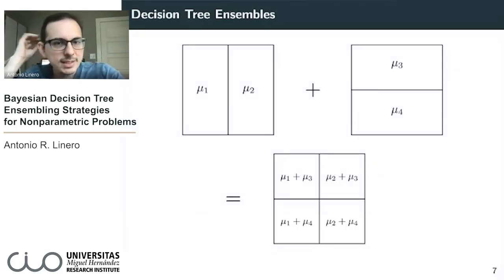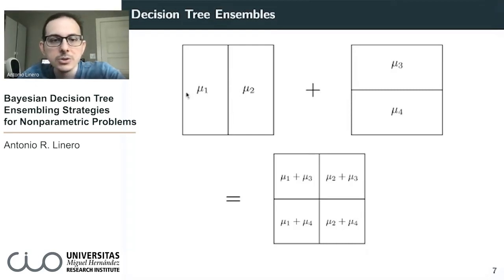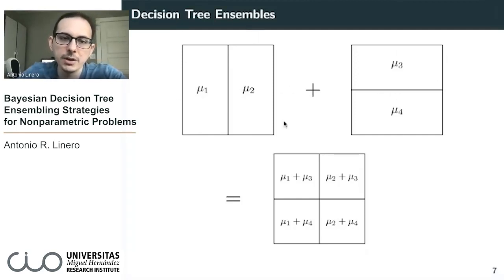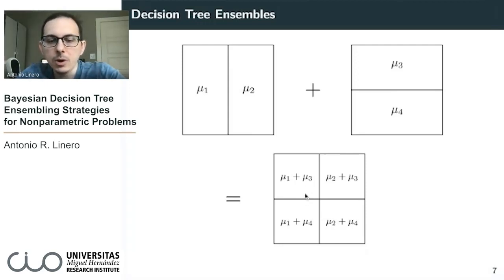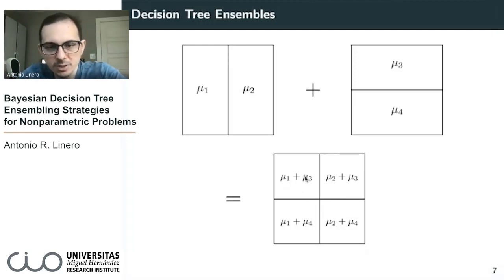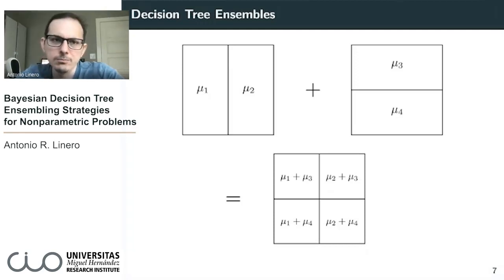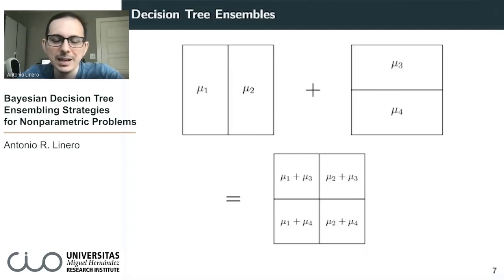What does it mean to add two trees together? You can associate to each tree a partition of the predictor space. If I add them together, it's like overlaying them on transparencies. I end up with a new combined partition where the quantity in each equivalence class is, say, mu1 plus mu3 — correlated in the prior with mu2 plus mu3 and mu1 plus mu4. So there's sharing of information across neighboring cells. Because of that, when you do these decision tree ensemblements, you generally get things that are approximately smooth.